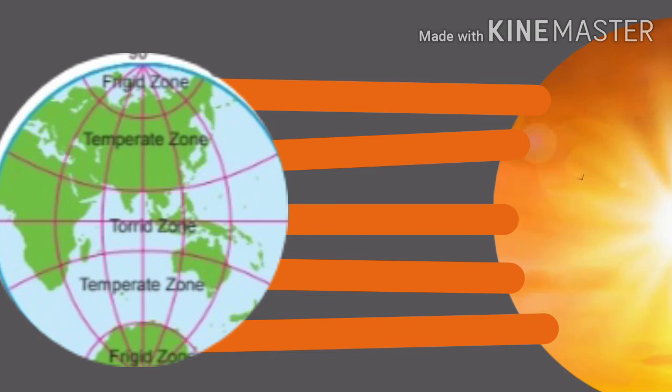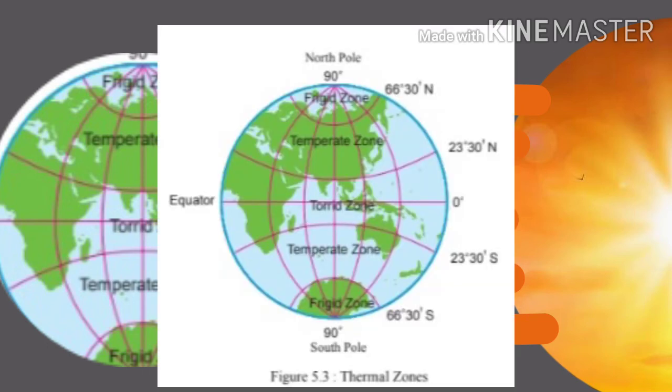Based on the distribution of temperature, the earth can be divided into torrid, temperate, and frigid zones, or tropical, temperate, and polar regions. Try to understand this from the figure.